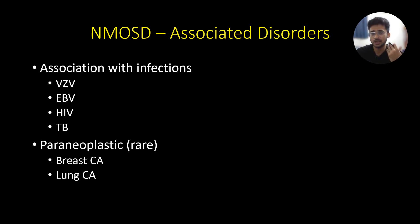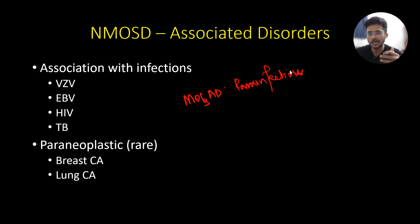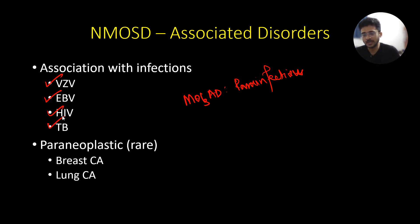NMOSD can rarely present as a para-infectious pathology, but remember it is usually MOG antibody associated disease that presents as a para-infectious or para-vaccination phenomenon. There have been reports of varicella, Epstein-Barr virus, HIV and tuberculosis being associated with NMOSD. Very rarely it can be a paraneoplastic phenomenon secondary to breast or lung carcinoma.